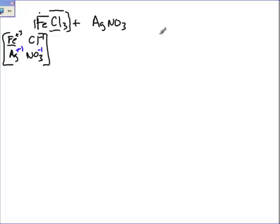When they get together on the other side of the equation, Ag gets together with Cl — the charges cancel, giving AgCl. And then Fe gets with NO₃, but the charges don't balance with just one, so you have to put 3 nitrates to get Fe(NO₃)₃.